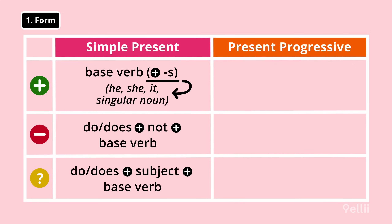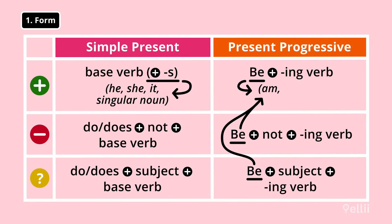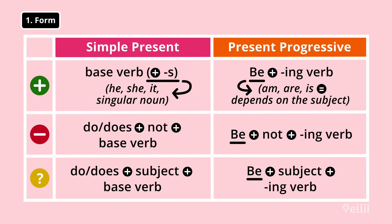The present progressive tense is formed with an auxiliary verb and a main verb in affirmative sentences, negative sentences, and questions. The auxiliary verb is be and it changes to am, are, or is, depending on the subject. The main verb always takes an ing ending.